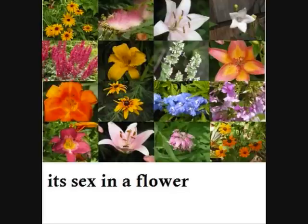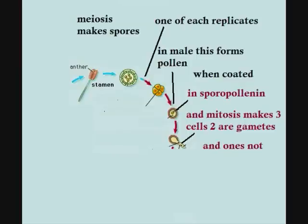It's sex in a flower. Meiosis makes spores — one of each replicates. In the male, this forms pollen when coated in sporopollenin, and mitosis makes free cells to form gametes.